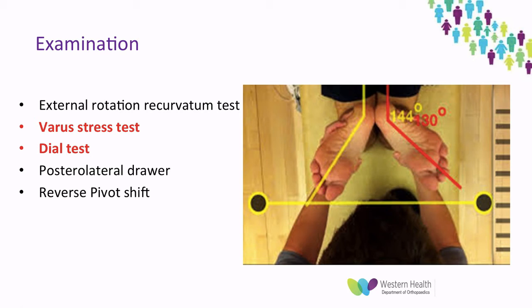The dial test is performed prone at 30 degrees of knee flexion and at 90 degrees of knee flexion. It looks at external rotation of the tibia. At 30 degrees, greater than 10 degrees increase in external tibial rotation compared to the contralateral side is indicative of a posterolateral corner injury. This is retested at 90 degrees — again, a positive test is greater than 10 degrees difference. Importantly, at 90 degrees, if the amount of rotation is greater than at 30 degrees, this is a sign of potential multi-ligament injury.